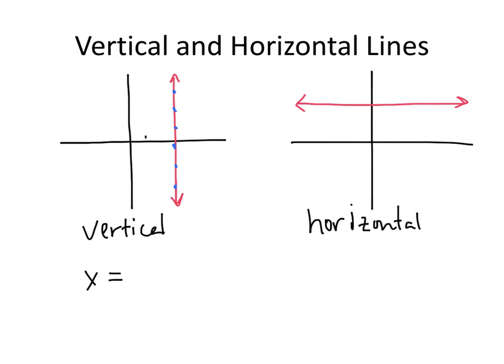For example, if this line was 3 units over on the x-axis, all of those points would have an x-coordinate of 3, and so we would describe that line by writing x equals 3. Alternatively, on a horizontal line, all of the points have the same y-coordinate. So if this line was 4 units up on the y-axis, we would call that line y equals 4, because every point on that line has a y-coordinate that equals 4. So the equation of a vertical line looks like x equals some constant, and a horizontal line looks like y equals some constant.